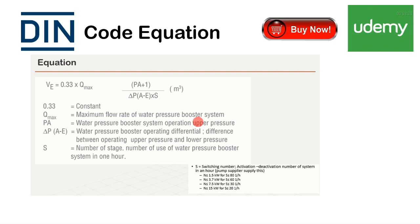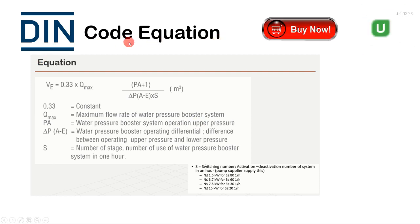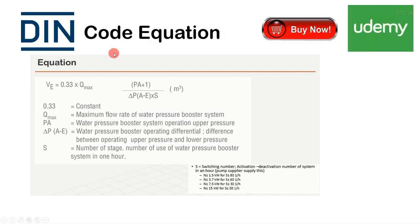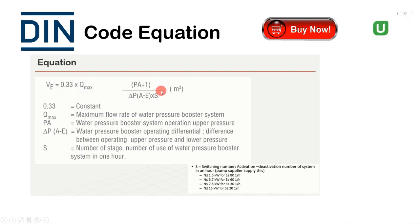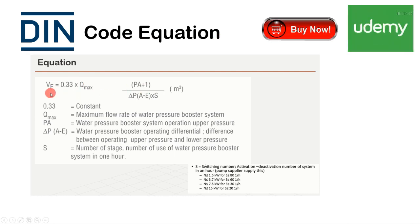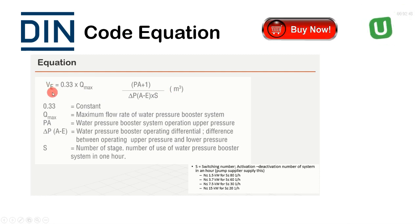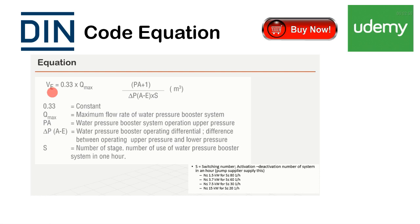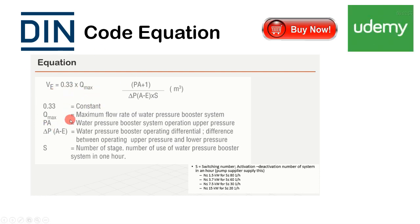This is the DIN code equation — a German standard. In this equation, VE is your pressure tank size in cubic meters. The equation contains the constants Qmax, PA, deltaP, and S, where S is the switching number.